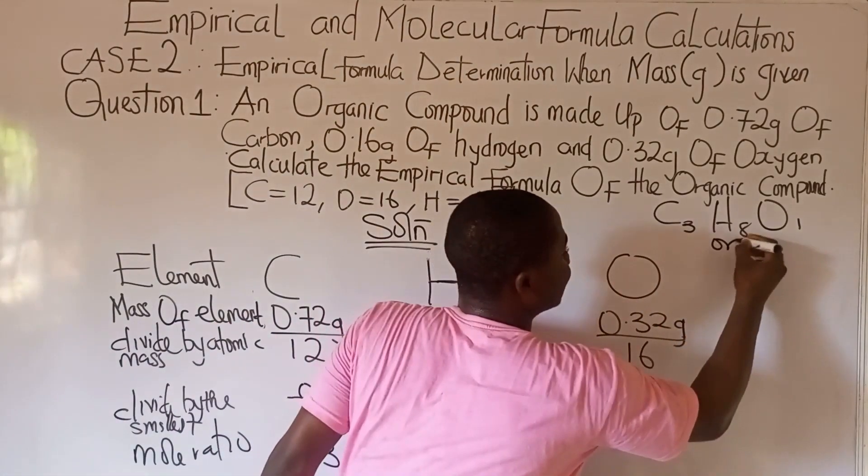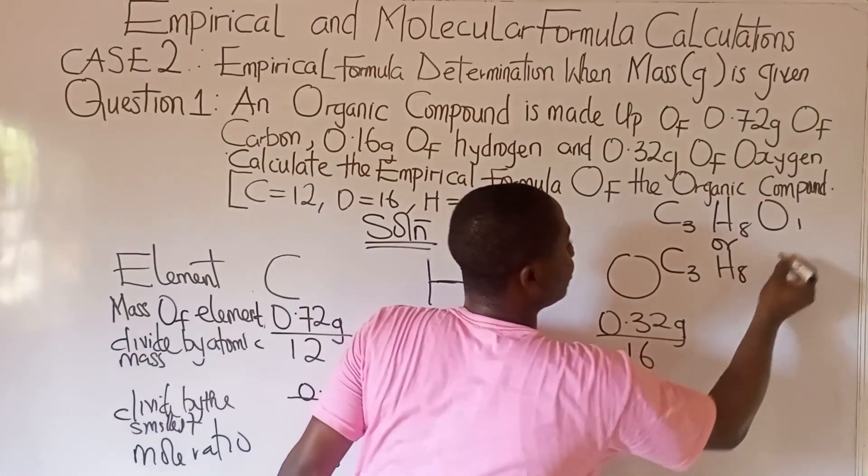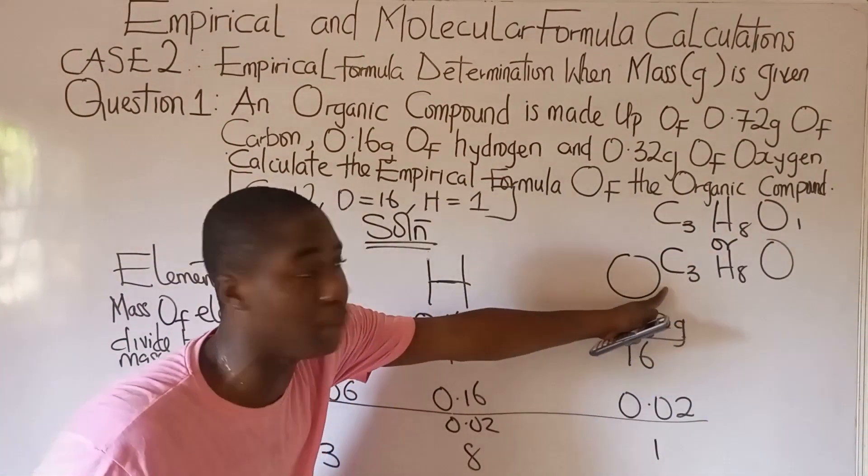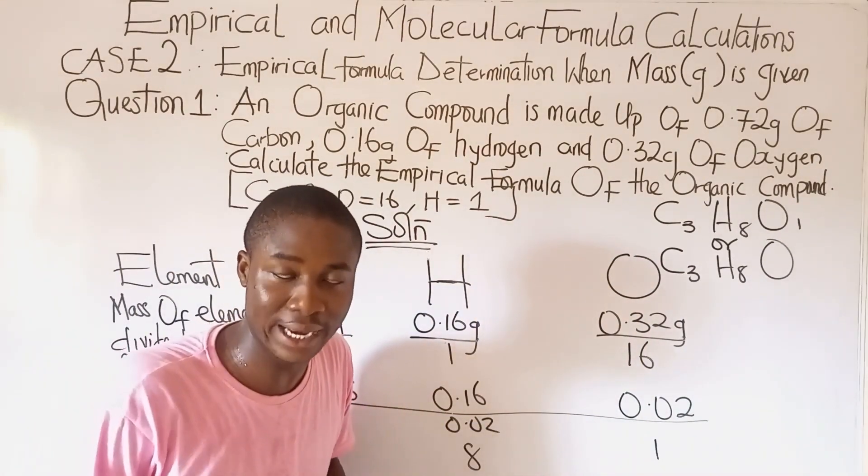Best we write it as C3H8O because one is negligible. This is the empirical formula of the organic compound. Why is it the empirical formula of the organic compound?